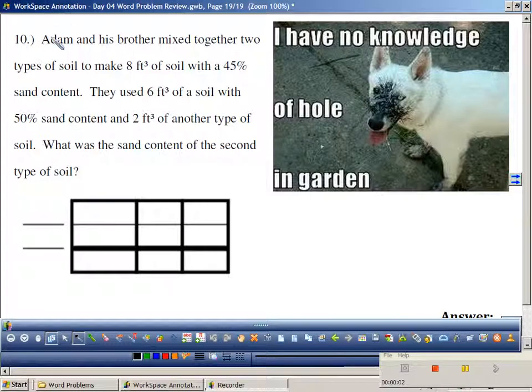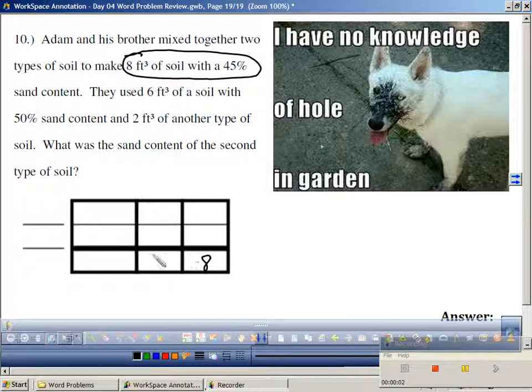Last one. The bell's going to ring. Adam and his brother mixed together two types of soil. They made 8 feet of 45%. They used 6 feet of soil with 50% content and 2 feet of soil with another type. What is the sand content of the second soil? So there's that one set up for you too. Have a great day, guys.